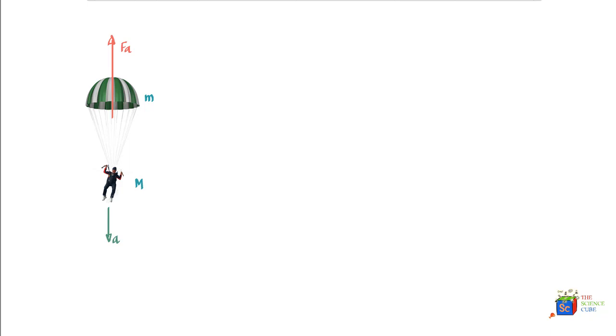We have to express F_A in terms of m, M, and acceleration. We'll apply Newton's second law of motion, but we'll do it a little differently here — we'll treat the parachute and the parachutist as a composite system.